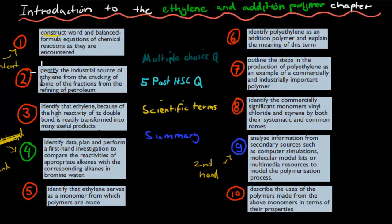We have identify for the second. We have identify for the third. We've got identify and compare for the fourth, so two verbs for the fourth. We have identify for the fifth. We have identify for the sixth. We have outline the steps of production for the seventh.